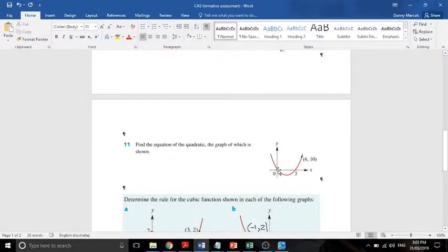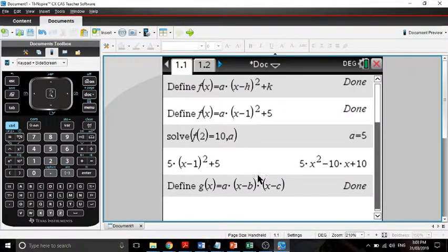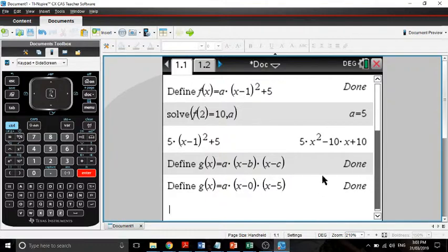And now, so b will be 0, c will be 5. So now we've got that there.